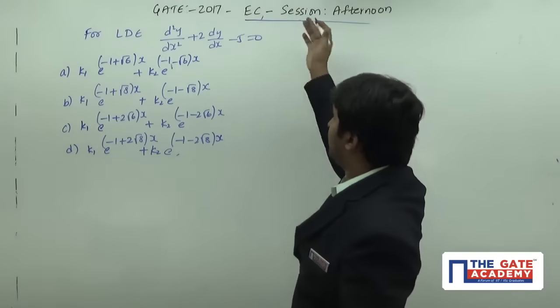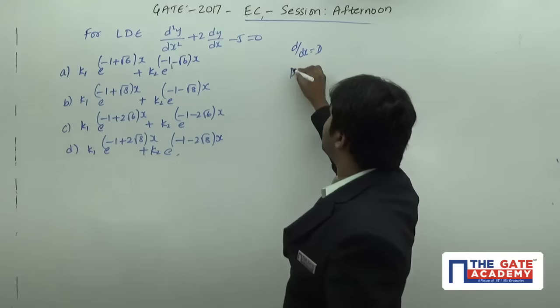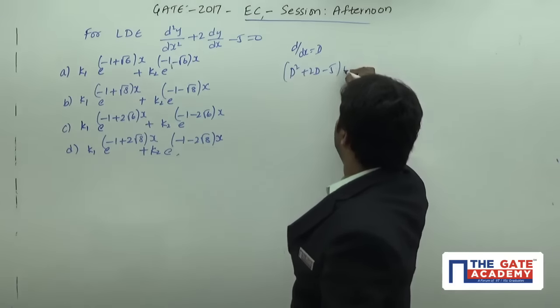So how to find a complementary function? I will just take d by dx is equal to capital D. We are going to have d square plus 2d minus 5 into y is equal to 0.